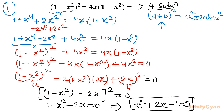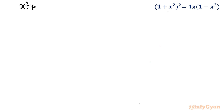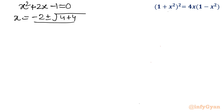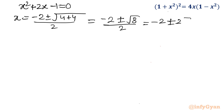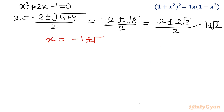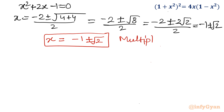We will get two solutions from this quadratic equation and both will be repetitive. Let's solve. So x² + 2x - 1 = 0. By the quadratic formula: x = (-2 ± √(4 + 4)) / 2 = (-2 ± √8) / 2 = (-2 ± 2√2) / 2. So our final solution is x = -1 ± √2, with multiplicity 2.